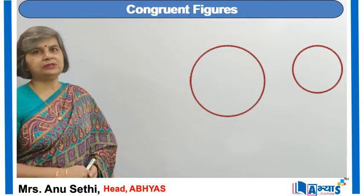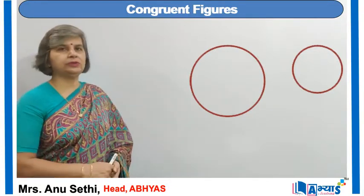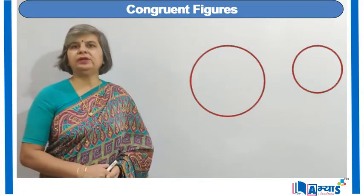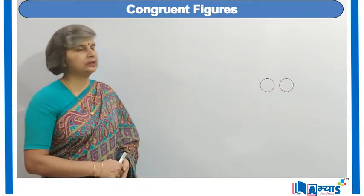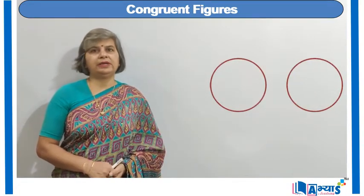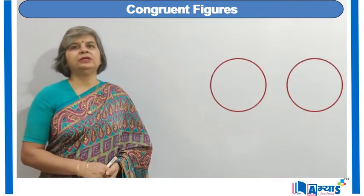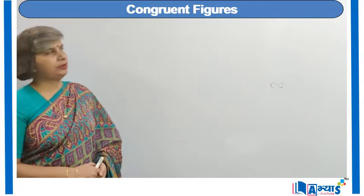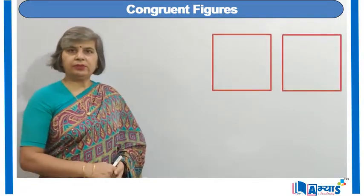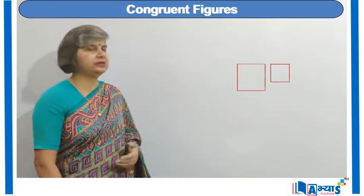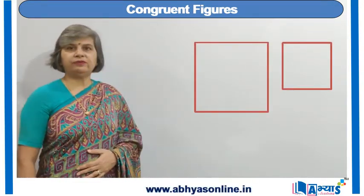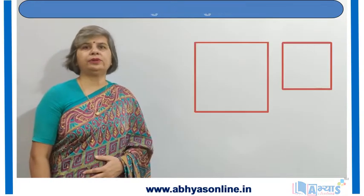For example, if we have two circles where the shape is the same but the radii are different, then they are non-congruent circles. But if two circles have the same radius, they are congruent. Similarly, in the case of squares, two squares with the same side length are congruent. But if two squares have different side lengths, the shape is the same but the sizes differ, so they are not congruent to each other.